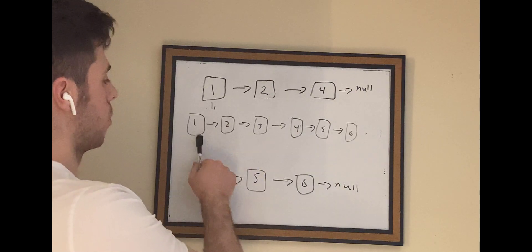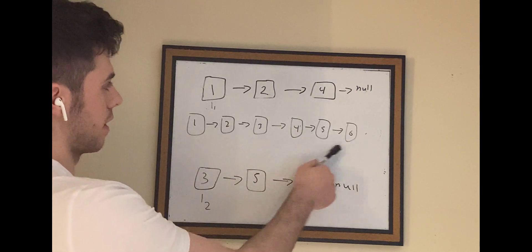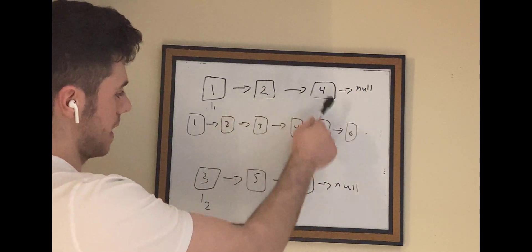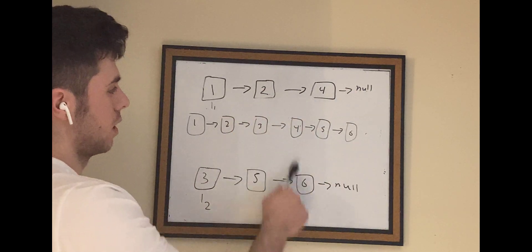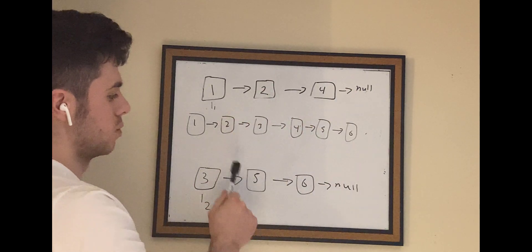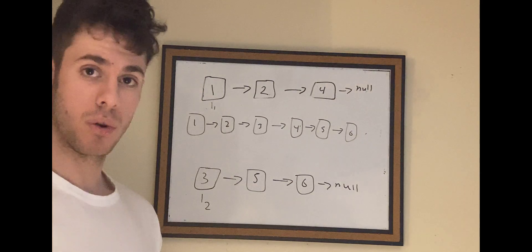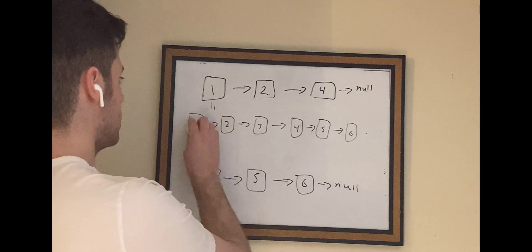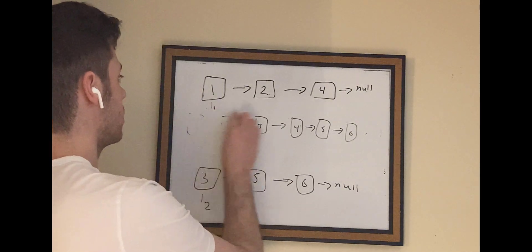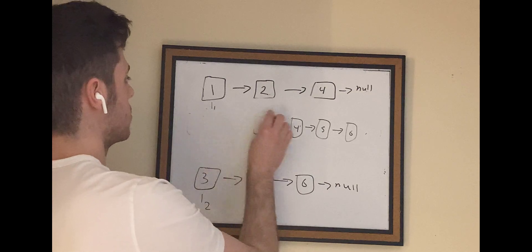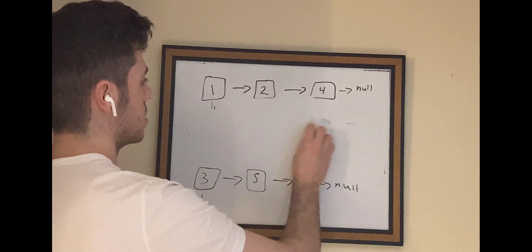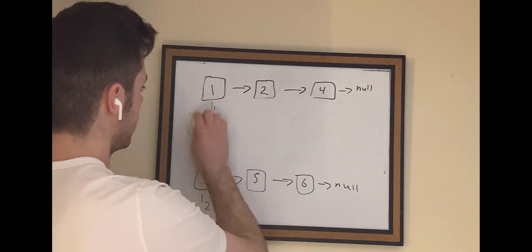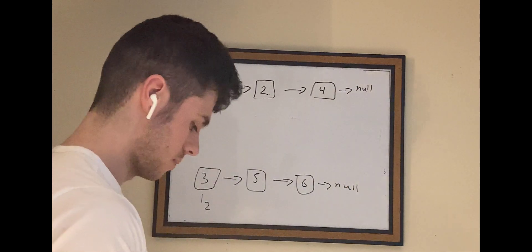As you can see, the merged result is 1, 2, 3, 4, 5, 6 — it has all the nodes from these two lists and it's sorted. So how we can actually do this is really not that hard, so let's consider how we can do this.